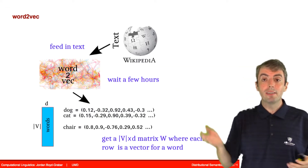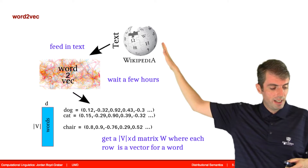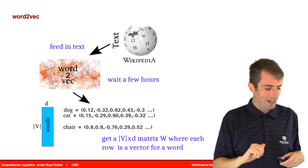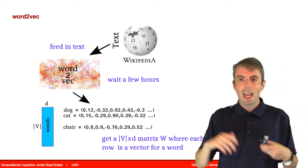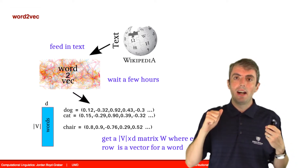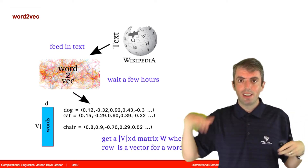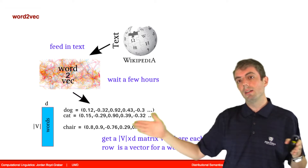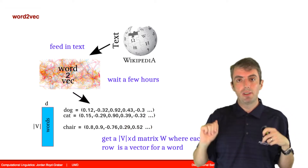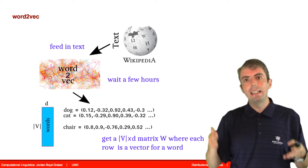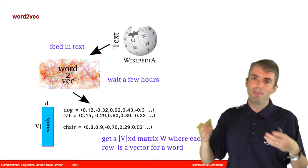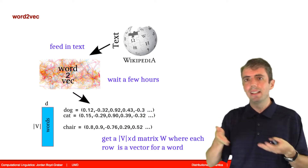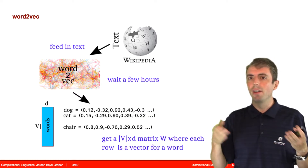The way this works is you take a large collection of text, feed it into the algorithm, and you get vectors out. The output is a matrix with rows for every word in your vocabulary and columns for all the dimensions you want to learn. Typically the number of dimensions is between 50 and 1,000, but usually in the range of 200 to 300.